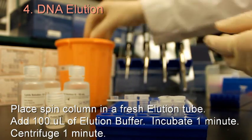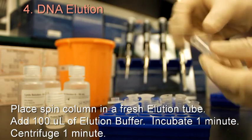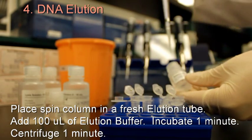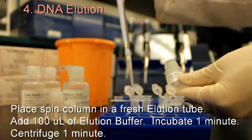Place each spin column in a fresh elution tube. Add 100 microliters of elution buffer to each spin column. Incubate 1 minute and centrifuge 1 minute.